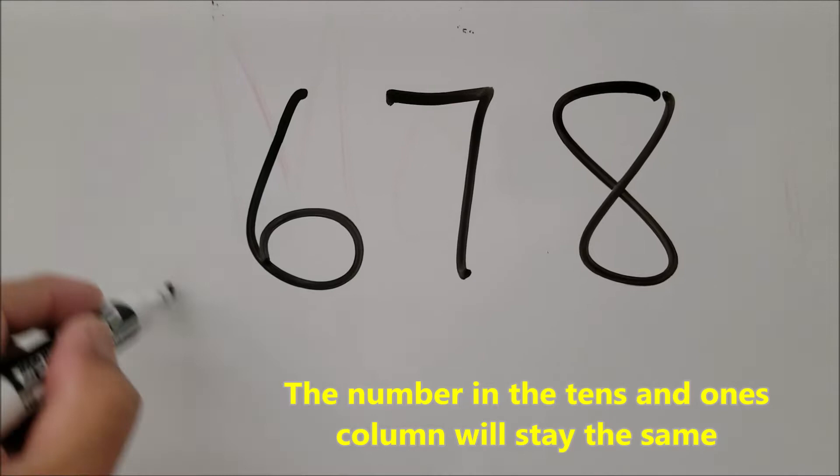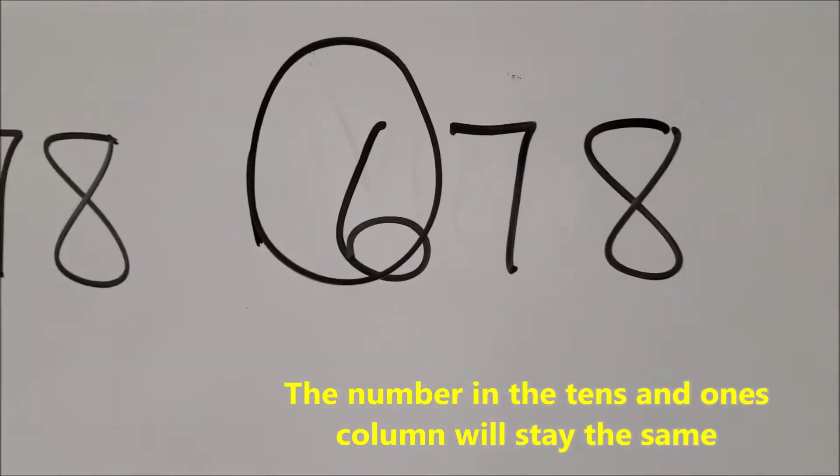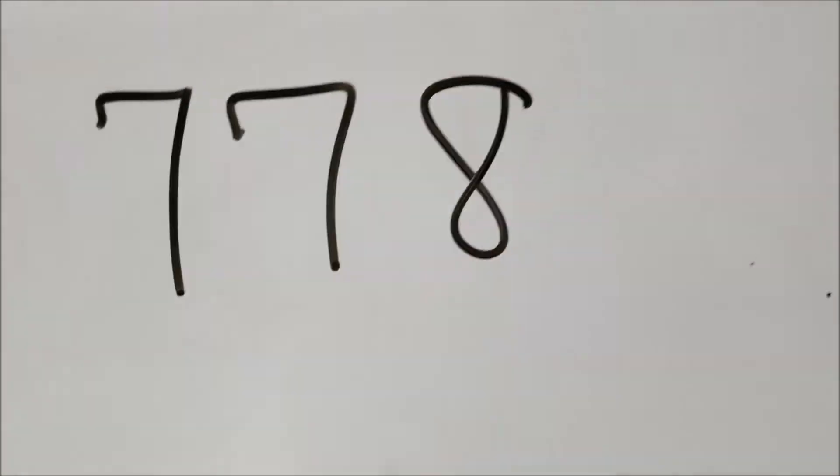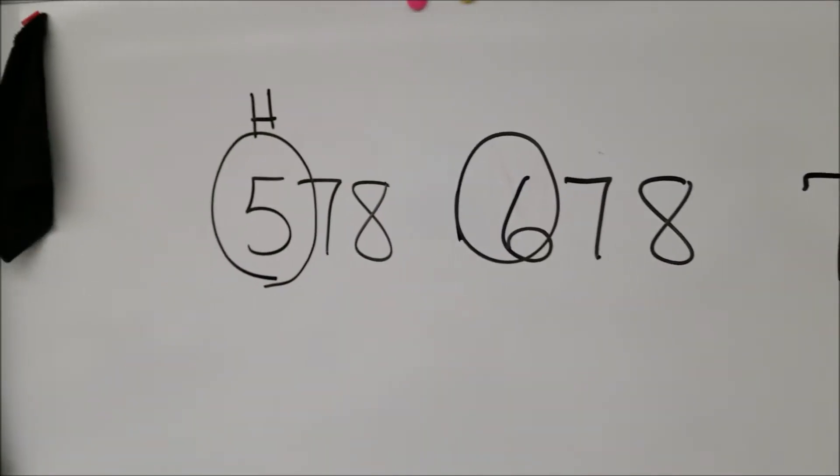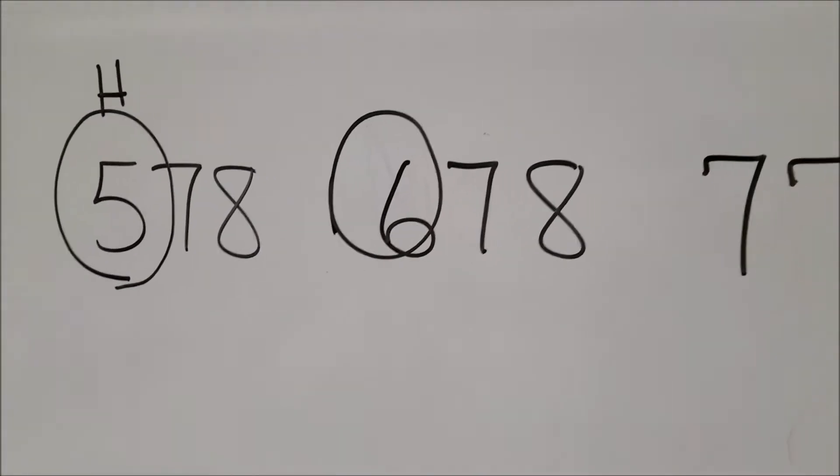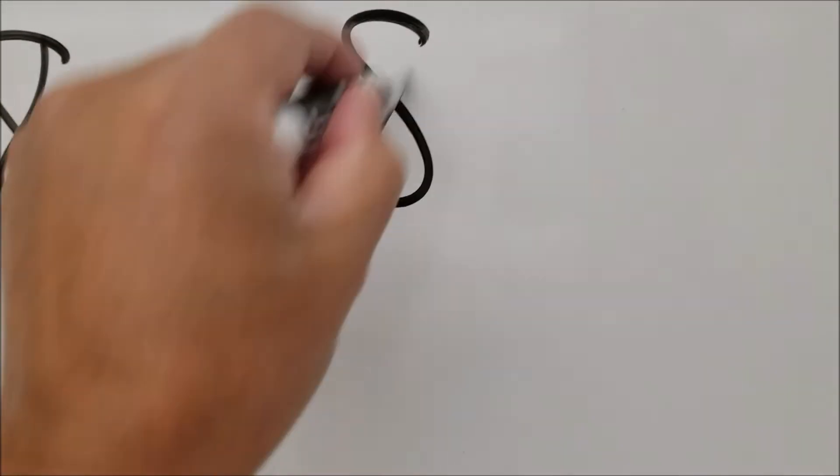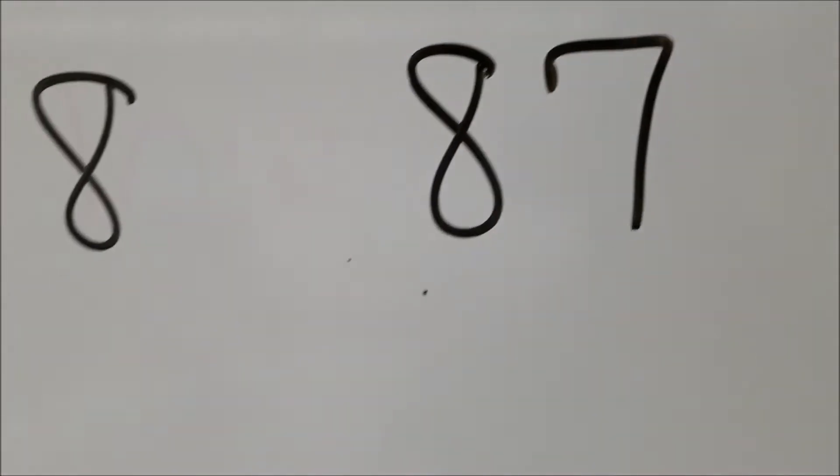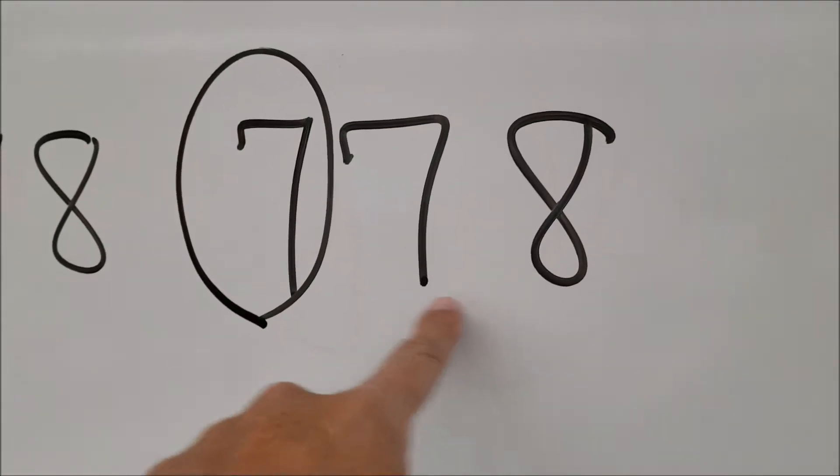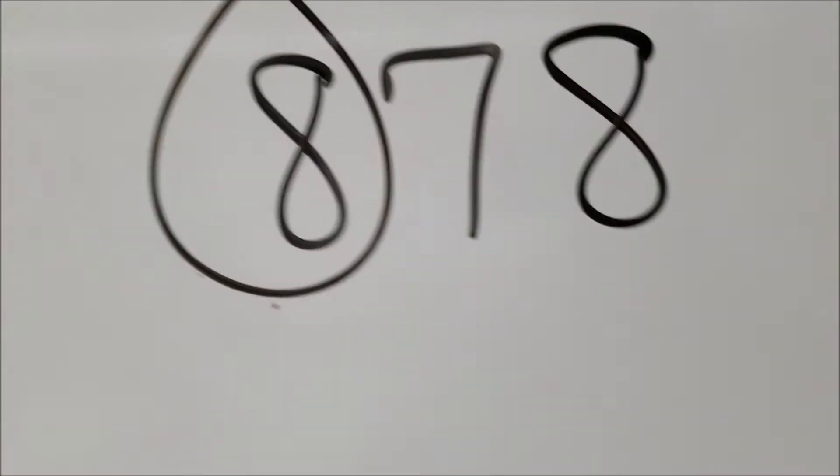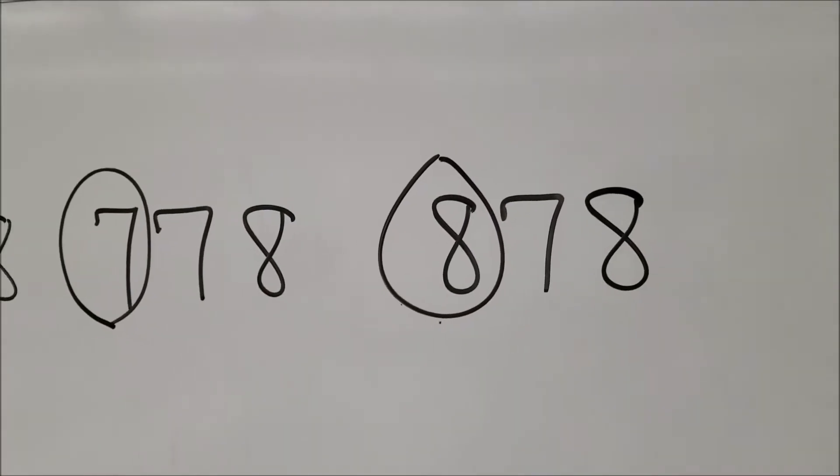So I just have them go, okay, it's just going to be the number in the 100s. So it'll just go up from there, 778. So you can just see the pattern, 5, 6, 7, and it'll just keep going up from there. So my students will just go, okay, keep the numbers in the 1s and the 10s the same, and just keep increasing the number in the 100s column.